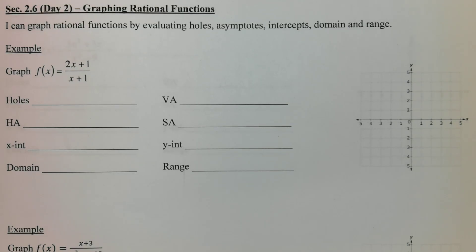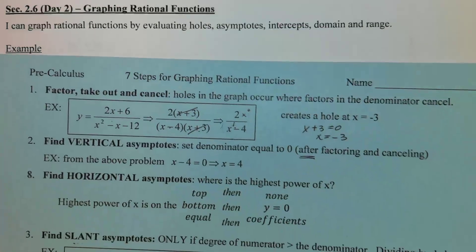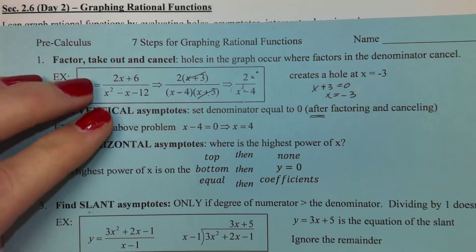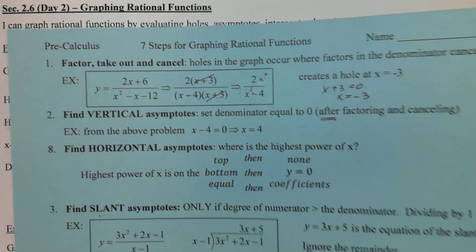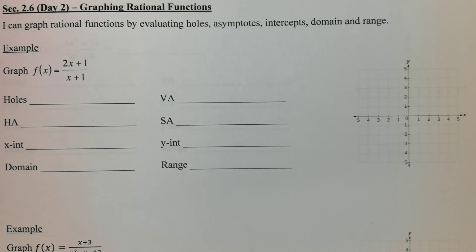This is 2.6 day two and today we're really going to get into graphing rational functions. The lesson previous to this was more about just identifying stuff about the graph and now we're going to actually figure out all the things about the graph. So I'm going to be using that same blue card. I'm just going to be walking through each step one at a time. So hopefully you have your card right next to you so you know the steps.